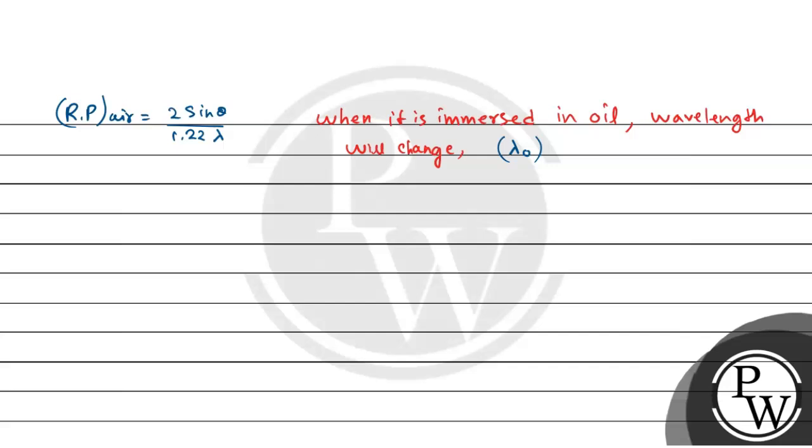Now, lambda o - let's find it. We know that velocity equals frequency times lambda. Velocity of light is c. Now, the frequency - this frequency remains same in all medium.